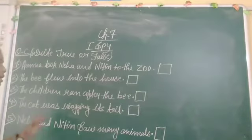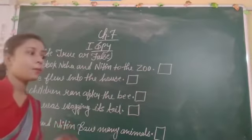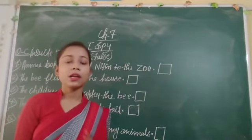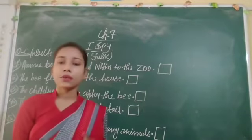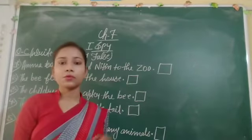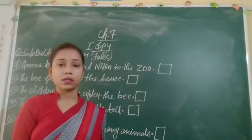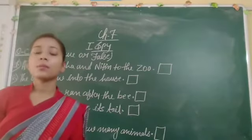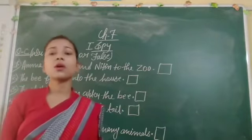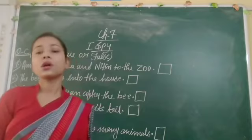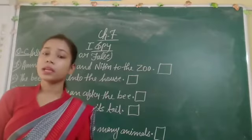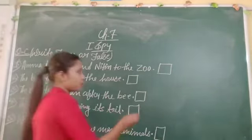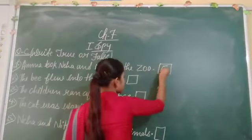Amma took Neha and Nithin to the zoo. If it is true, you have to put T. But this statement is not true — Amma was very busy, so she did not take Neha and Nithin to the zoo. So we have to put F here because this statement is false.